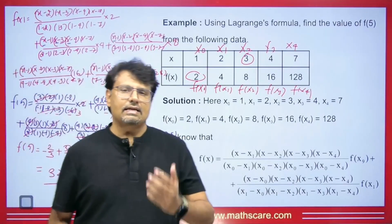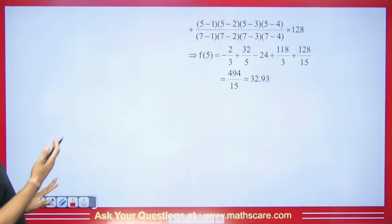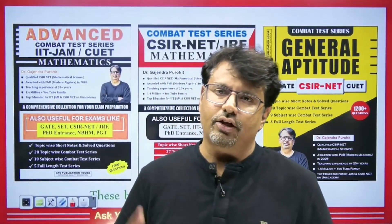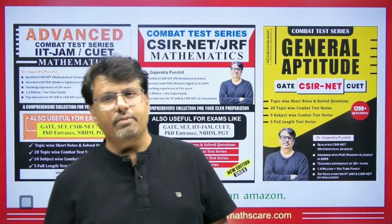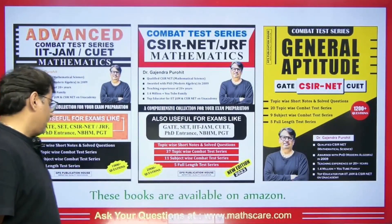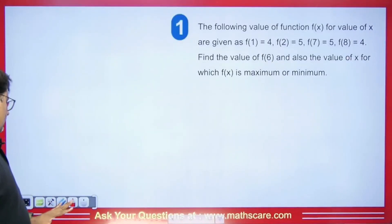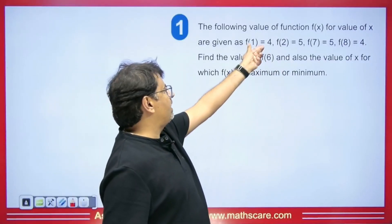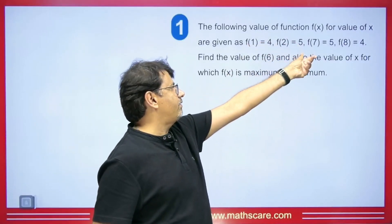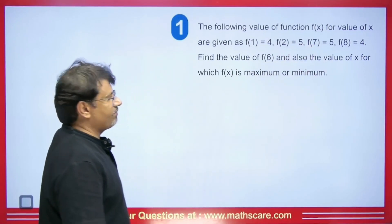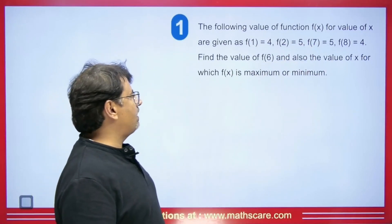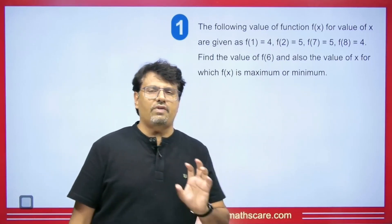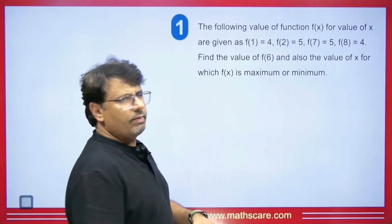So this way we can easily do it. You can check the calculations. Before the next question, I want to mention that if you are preparing for CSIR, NET, Gate, or IIT JAM exam, our books are available on Amazon and Flipkart. The next question: given values of f(x) — f(1)=4, f(2)=5, f(7)=5, f(8)=4 — find f(6) and also find the value of x for which f(x) is maximum or minimum.